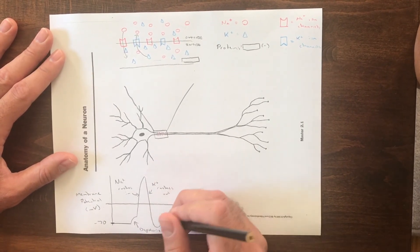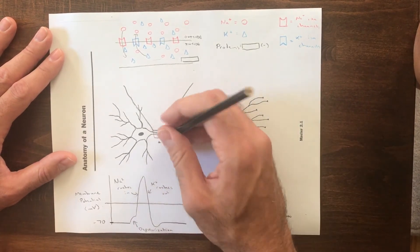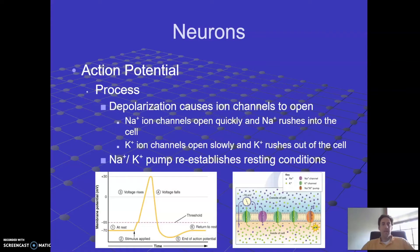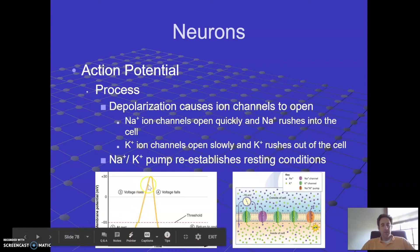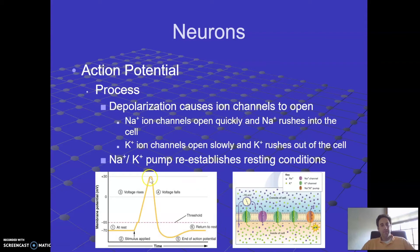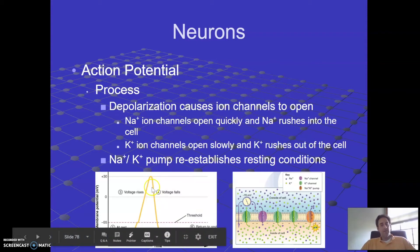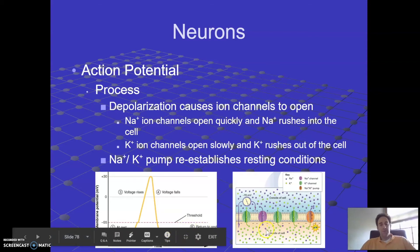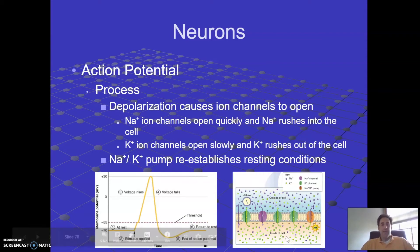This process is called an action potential, and we can represent it on a graph. To summarize: sodium ion channels open quickly, so sodium rushes into the cell, bringing the potential up to a high value. Potassium ion channels open more slowly; when they do, potassium ions rush out, and since we're losing positive charges, it brings the potential back down. Then the sodium-potassium pump uses energy to put sodium back outside and potassium back inside the cell, so we can do this all over again.